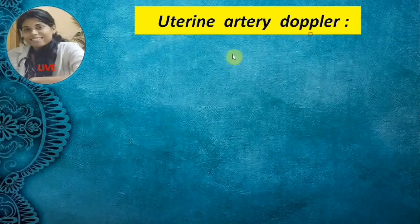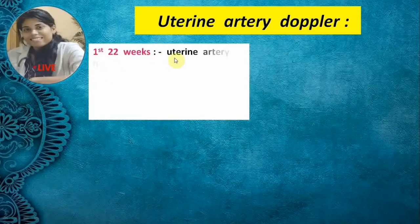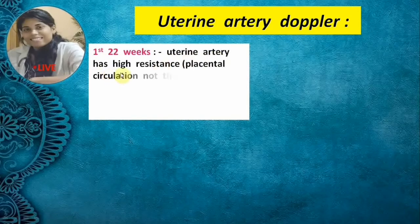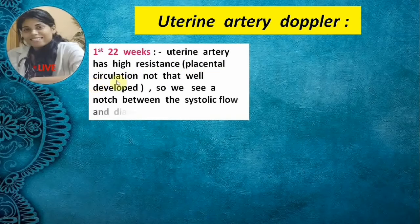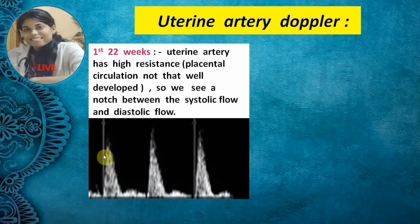In the first 22 weeks of pregnancy, the uterine artery is high resistance because placental circulation is not yet well developed. We see a notch between the systolic flow and the diastolic flow. This is the systolic flow, and this is the high-resistance diastolic flow — appreciate the notch between them.